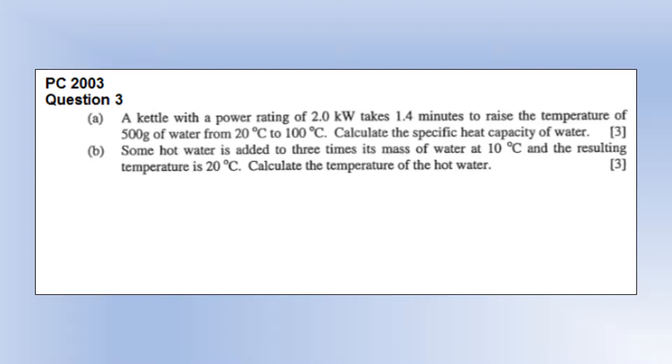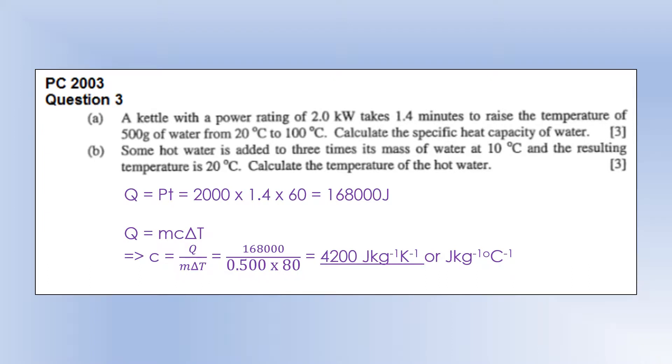A kettle with a power rating of 2 kW takes 1.4 minutes to raise the temperature of 500 grams of water from 20 degrees to 100 degrees. Calculate the specific heat capacity of water. So we can work out the total amount of energy supplied to the heater, assuming it's 100% efficient, and then rearrange Q equals mc delta T to calculate specific heat capacity, remembering to turn the mass of water into kilograms. That should come out as 4200 joules per kilogram per kelvin.